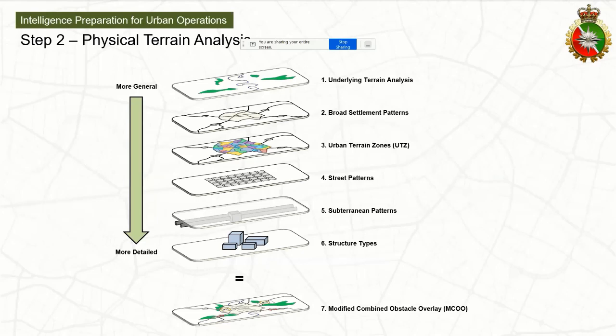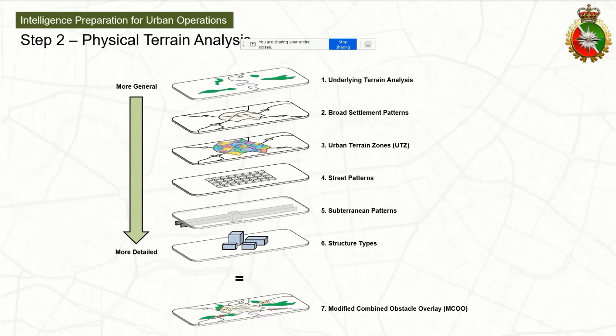Starting with physical terrain analysis in step two of IPOE. This isn't to say that FLOCART — analyzing features, lanes, objectives, canalizing terrain, avenues of approach and rating avenues of approach and key terrain — is inappropriate or ineffective. We're still going to do it, but we're going to look at the underlying terrain and do FLOCART for that.